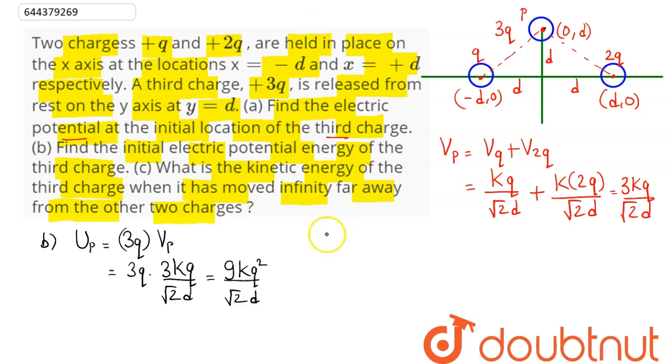Now, since electrostatic force is acting here, so we can conserve mechanical energy of the system. Since electrostatic force is conservative force, so initial potential energy plus kinetic energy is equal to final potential energy plus kinetic energy.